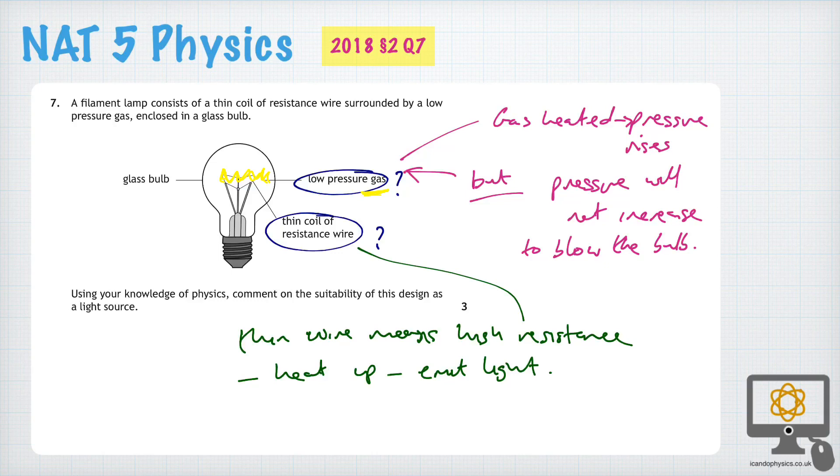It's very tempting to say, well, it's a thin coil, which means it's a high resistance, which means you'll not have a lot of current flowing through it. Well, actually, that's not the point at all. You want a good amount of current flowing through it so that it heats up and produces light.